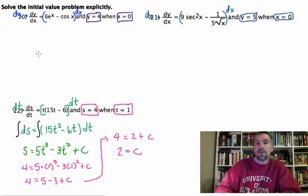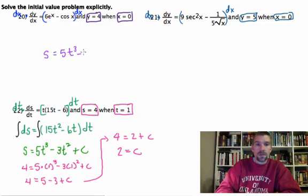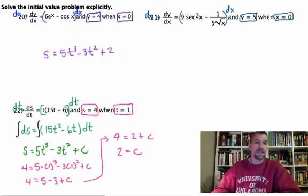So, my final answer, final answer for this guy, is going to be s equals 5t cubed minus 3t squared plus 2. And that's it.